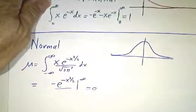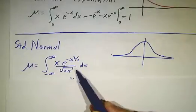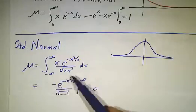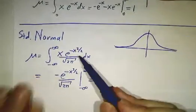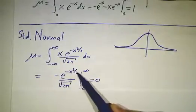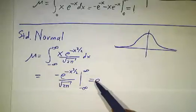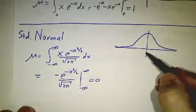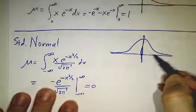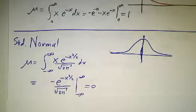For the normal distribution, you take x times this expression, but you do a u substitution with u equals x squared over 2, and you get that this is just minus e to the minus x squared over 2 over root 2 pi, evaluated at infinity and minus infinity, which is 0. And of course it's 0 — the whole distribution is symmetric about the origin. On average, you wind up to the right as often as to the left, so the average is 0.